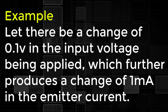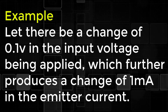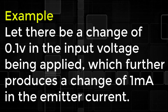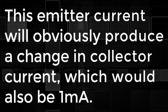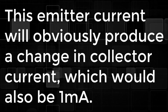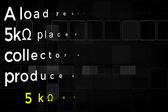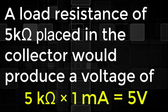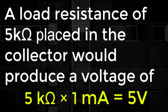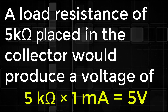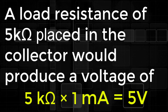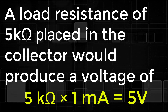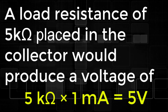For example, let there be a change of 0.1V in the input voltage being applied, which further produces a change of 1mA in the emitter current. This emitter current will obviously produce a change in collector current, which would also be 1mA. The load resistance of 5K ohms placed in the collector would produce a voltage of 5K ohms × 1mA = 5V. Hence, it is observed that a change of 0.1V in the input gives a change of 5V in the output, which means the voltage level of the signal is amplified.